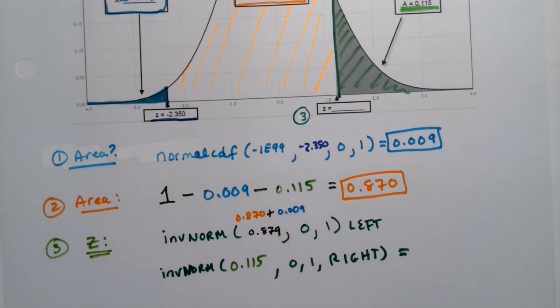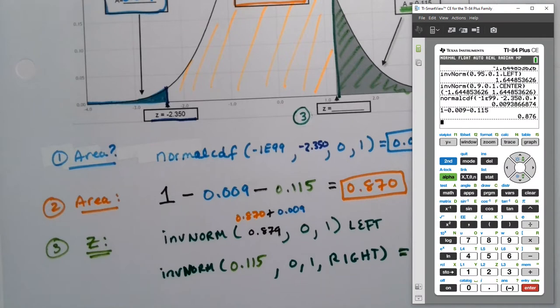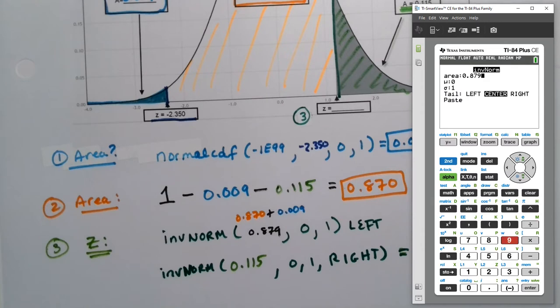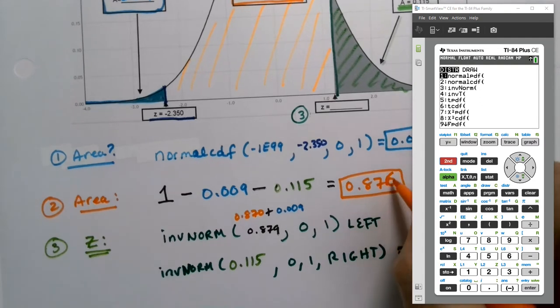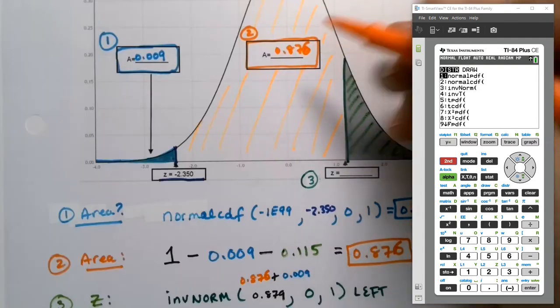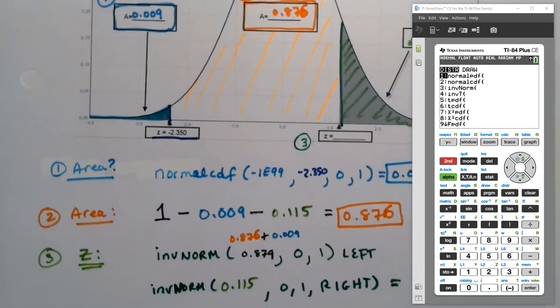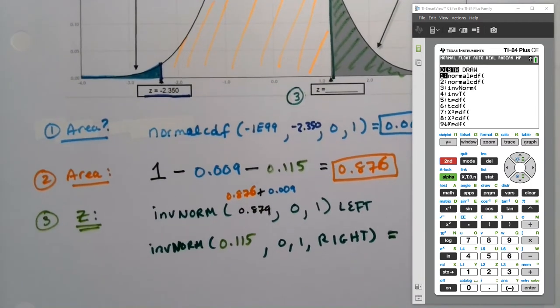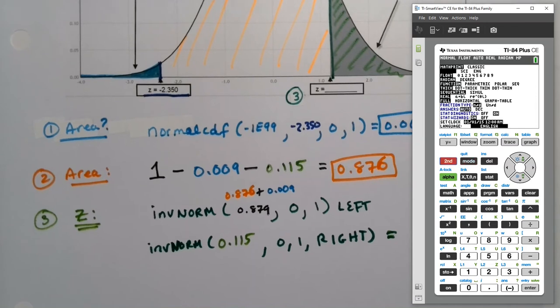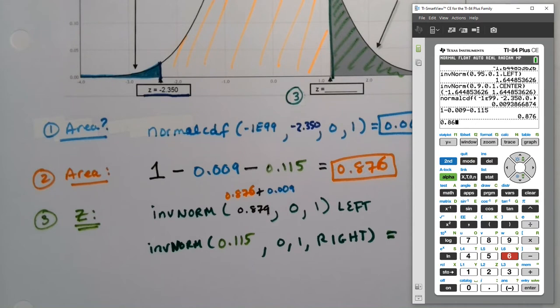Let me grab inverse norm, second distribution, inverse norm. So I can say 0.885 right here, 0 and 1. Wait, I wrote this wrong. It's 876. So 0.876 plus 0.009 is 0.885. I should have known these two need to add up to one, so these two should make 100% between them. They should be complements of each other.